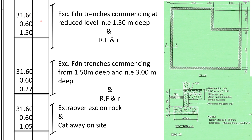Now for booking the quantities, we shall take the center line of the foundation multiplied by the width of the trench, multiplied by the first stage of 1.5 meters — described as: excavate foundation trenches commencing at reduced level, not exceeding 1.5 meters deep. After the strip level and not exceeding 3 meters deep, we write the center line times the width of the trench times the remainder of the depth. For the rock, which is usually an extra-over excavation item, we write the center line of the trench times the width of the trench times the depth of rock to be excavated.